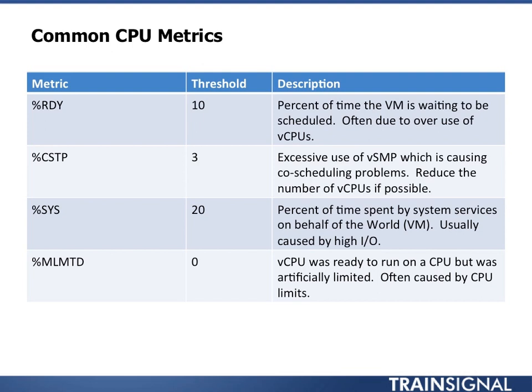Percent CSTP is excessive use of virtual SMP, causing co-scheduling problems. Basically, it means the system is having to do multiple vCPU switches and scheduling operations. You want to see this under 3 percent.